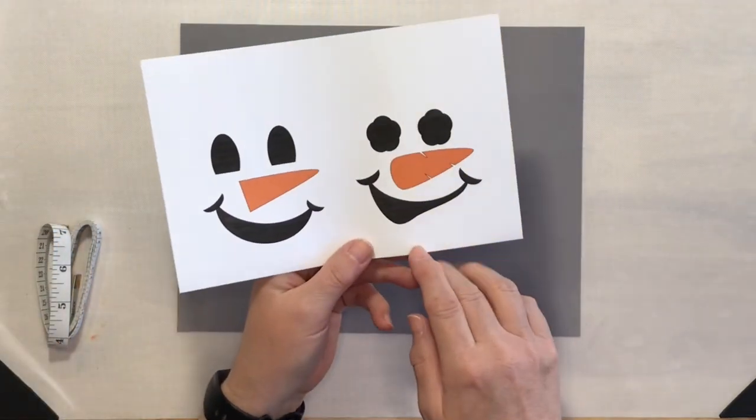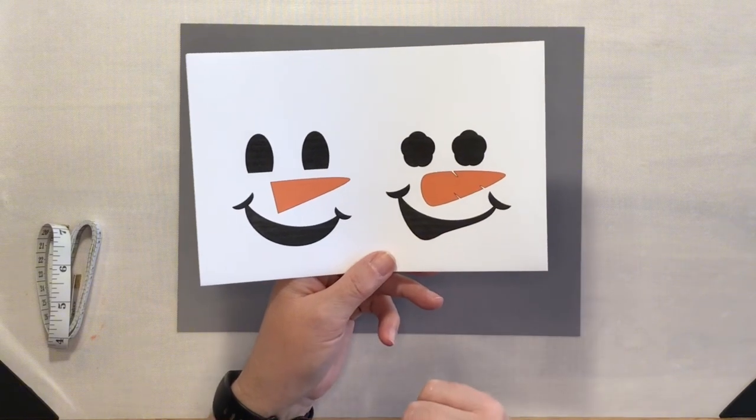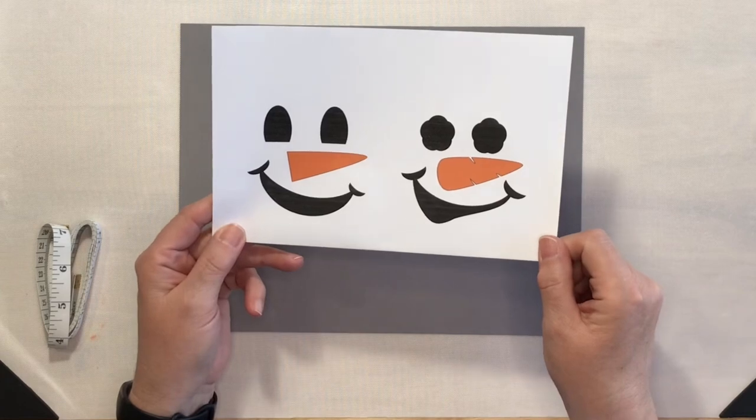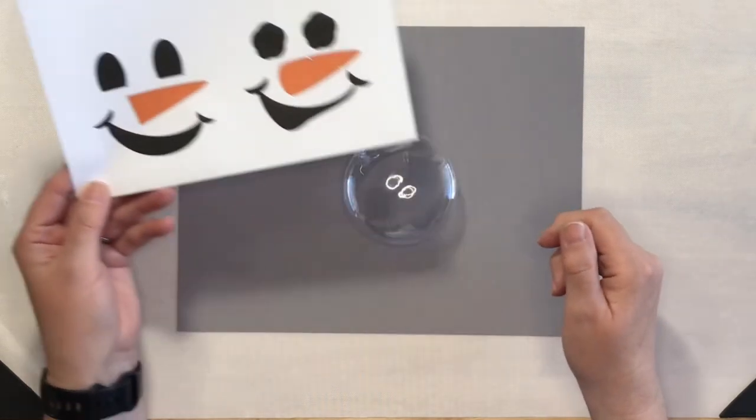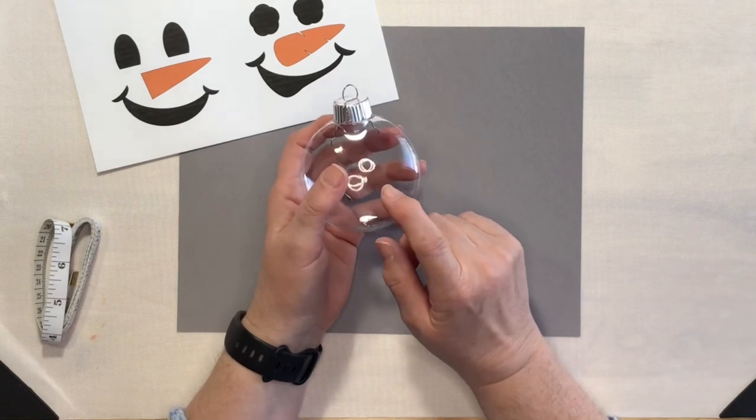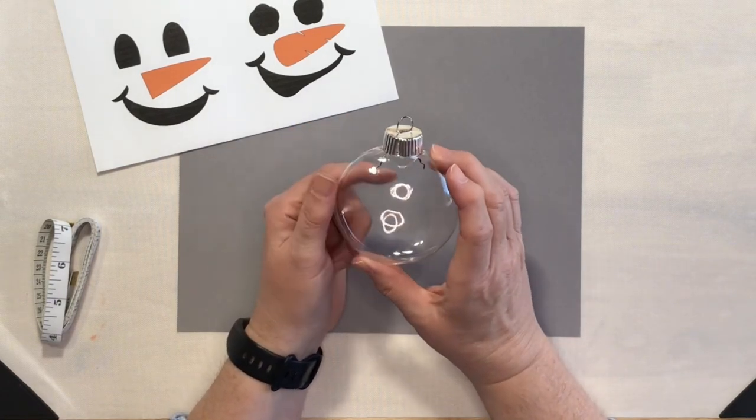Here are the images that I'm going to be using today. I will have a link so you can download these free images down in the description, as well as in the corresponding blog post. And I'm going to be using two different colors of Oracle 651 permanent adhesive vinyl.